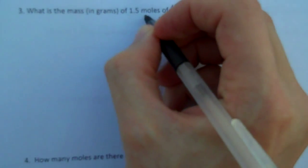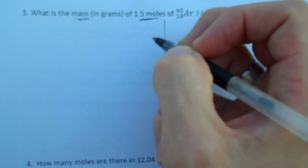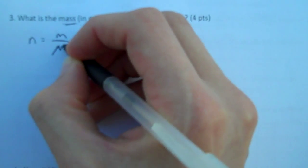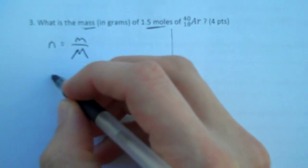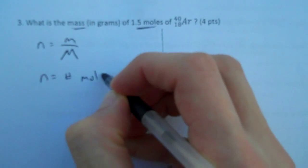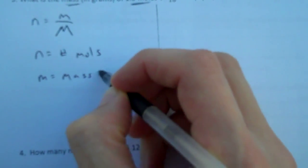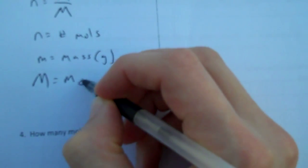Because I'm looking for moles and mass, I know that the equation I want to use is n equals little m over big M, where n equals the number of moles, little m equals mass in grams, and big M equals molar mass.